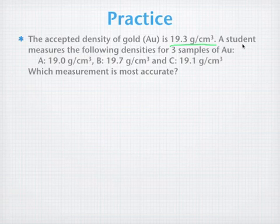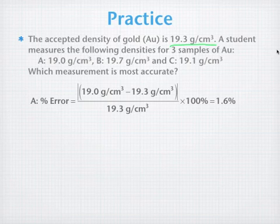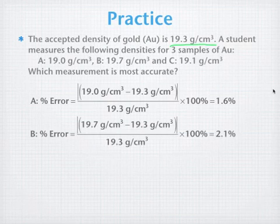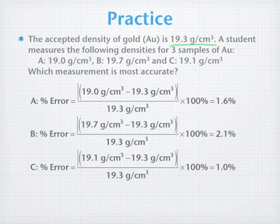So we're back, and hopefully you've got all of the percent errors calculated. For sample A, we have a percent error of 1.6%. The value for B is 2.1% error, and for C is 1.0% error. So of these three, which one is most accurate?